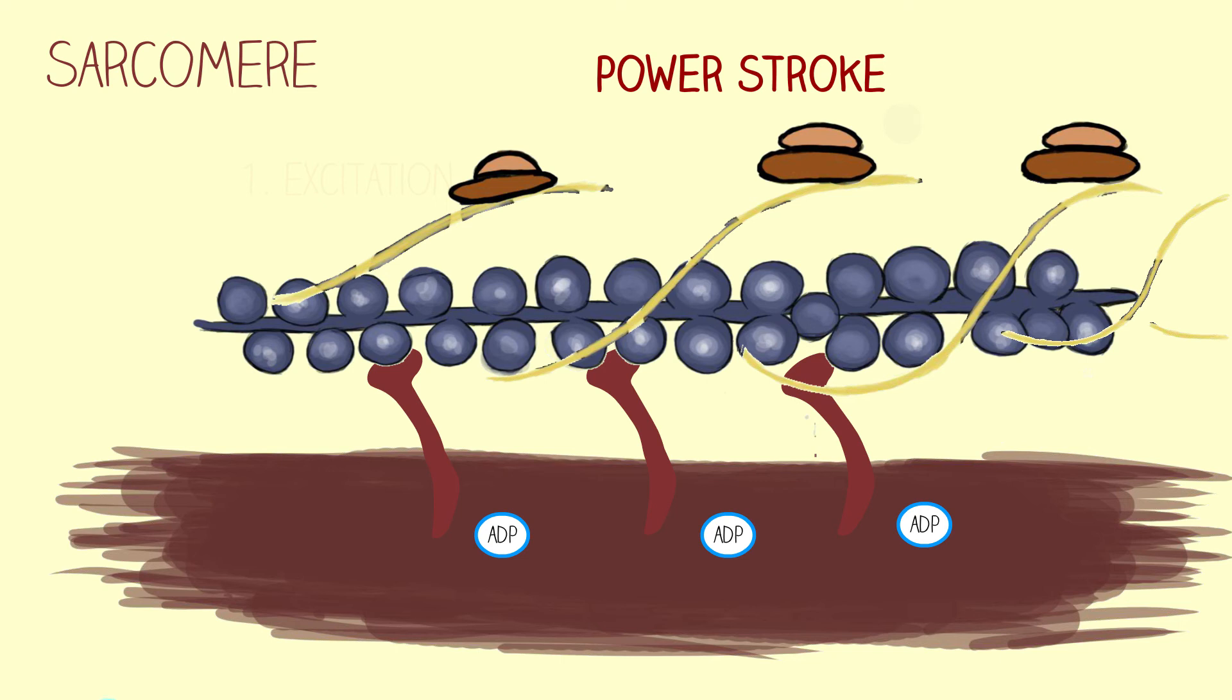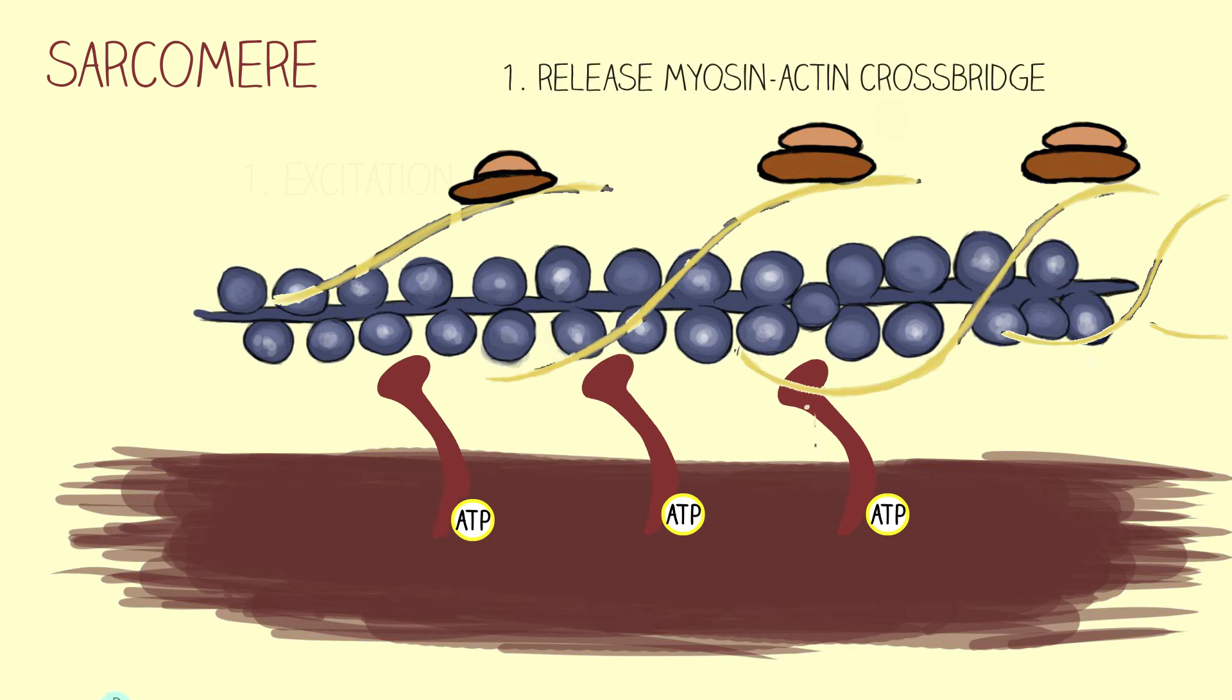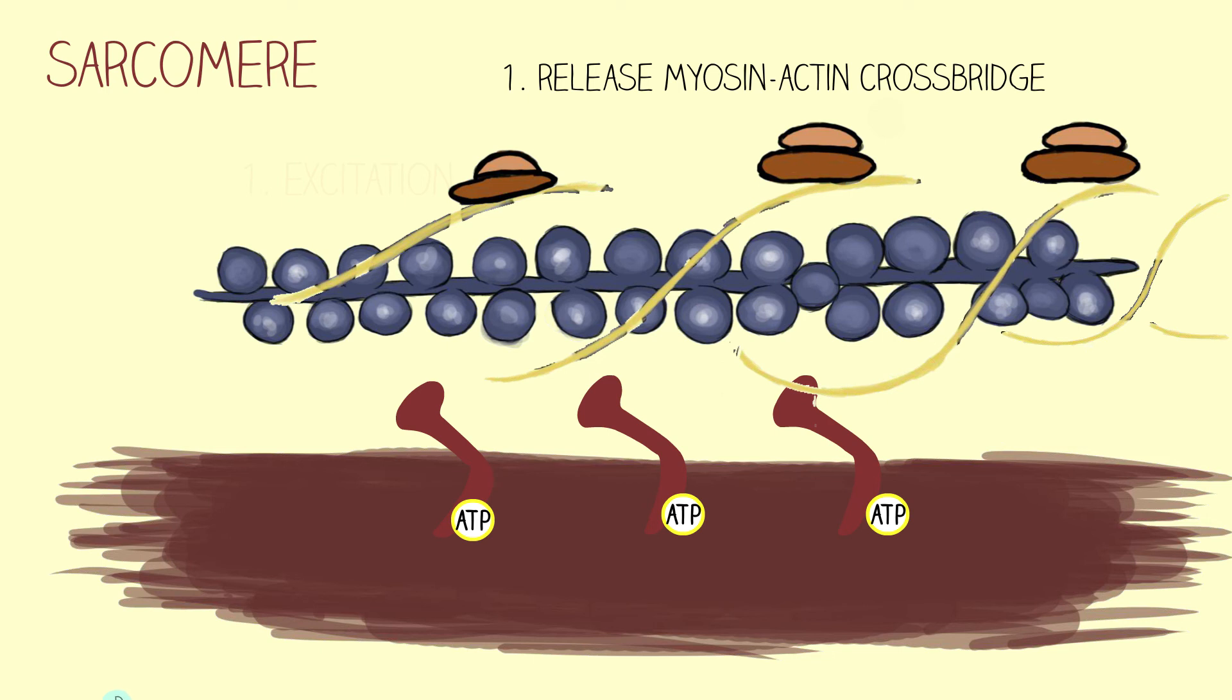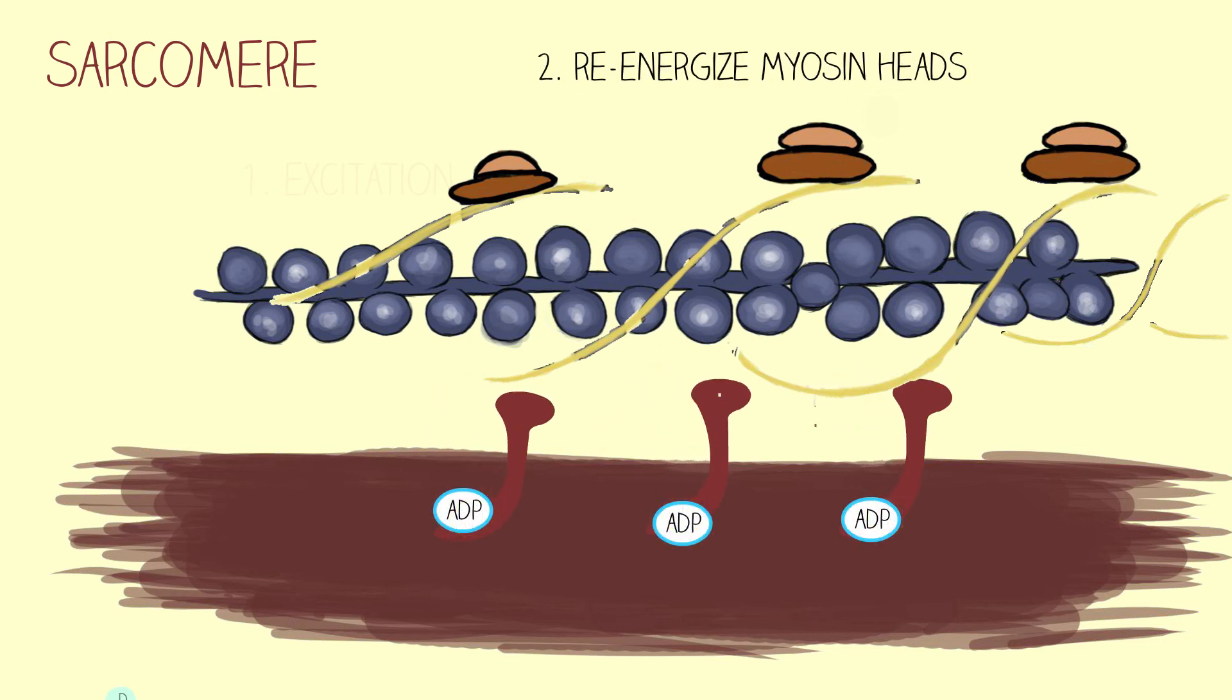Immediately after the power stroke, ADP is released from the myosin and a brand new ATP binds to the open binding site. The binding of the new ATP does two things. One, it will release the myosin-actin crossbridge. In other words, myosin and actin will become detached from each other. And it will also re-energize myosin through ATP hydrolysis, again through the breaking of a phosphate bond. This returns myosin back to step one again, that is, being energized, cocked, and prepped for a new contraction cycle.